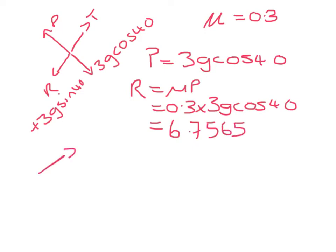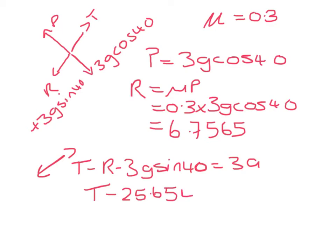If we look along the slope, resultant force in the direction of motion has to equal mass times acceleration. I'm not going to substitute in my value for R. So I have T minus 25.6544 equals 3A. All the way through this question I'm being careful to work to more than 3SF so I don't lose any marks for accuracy.